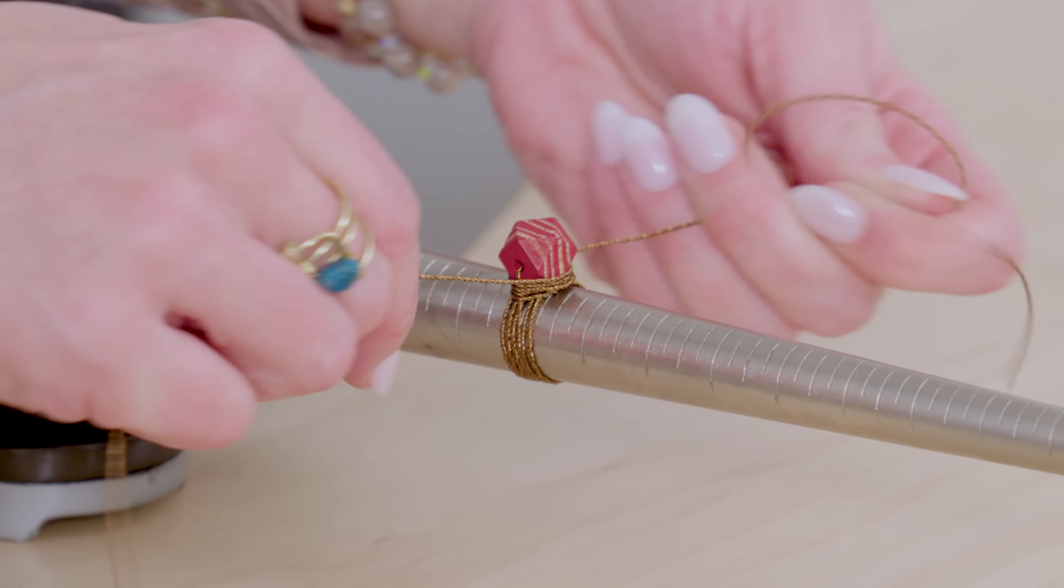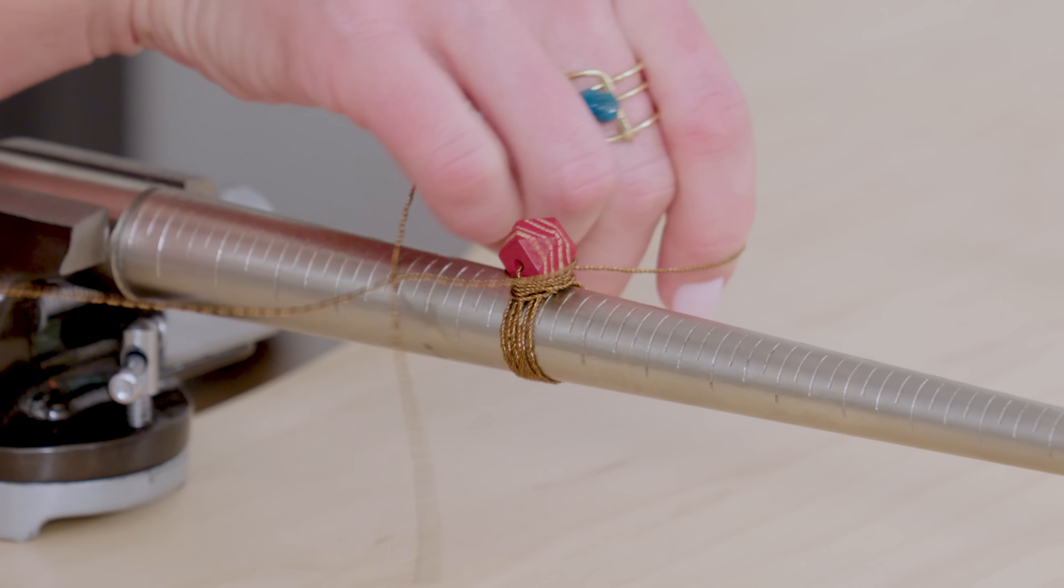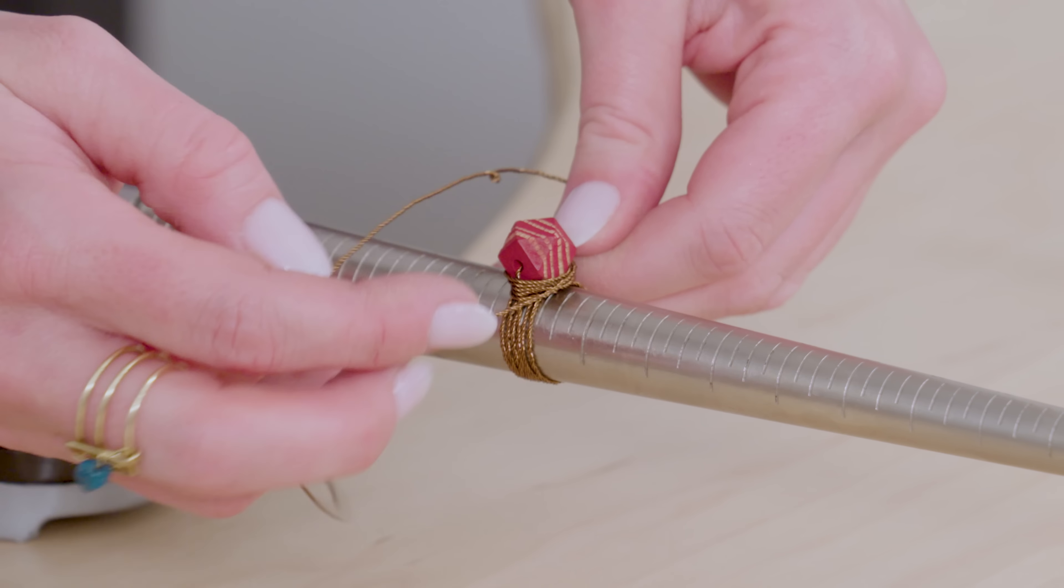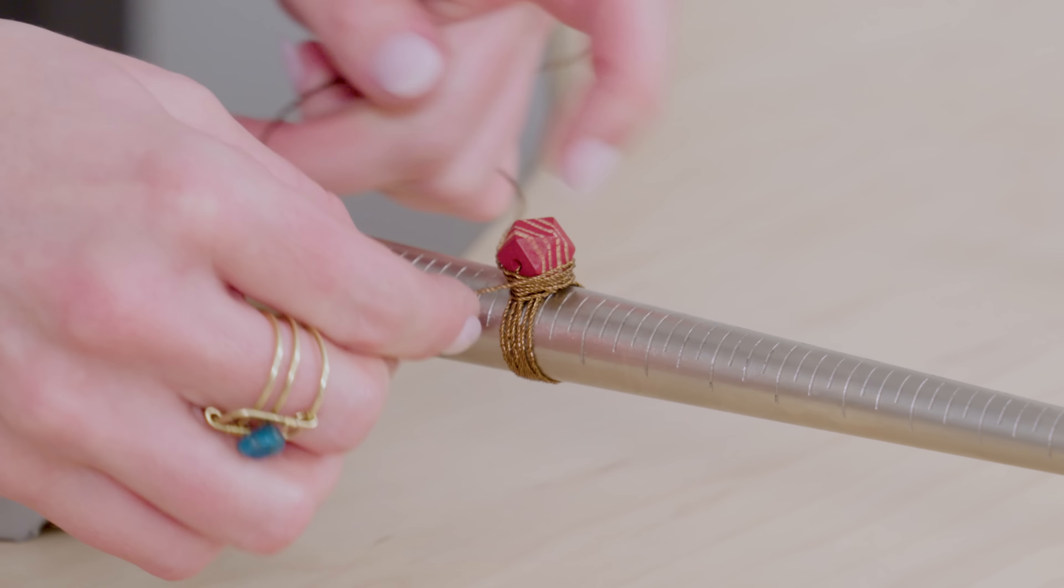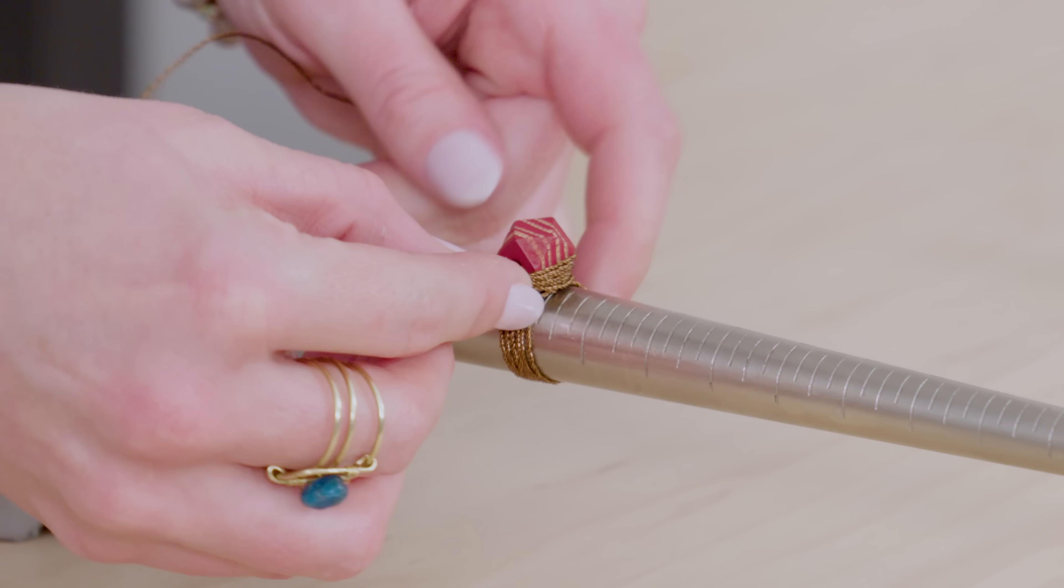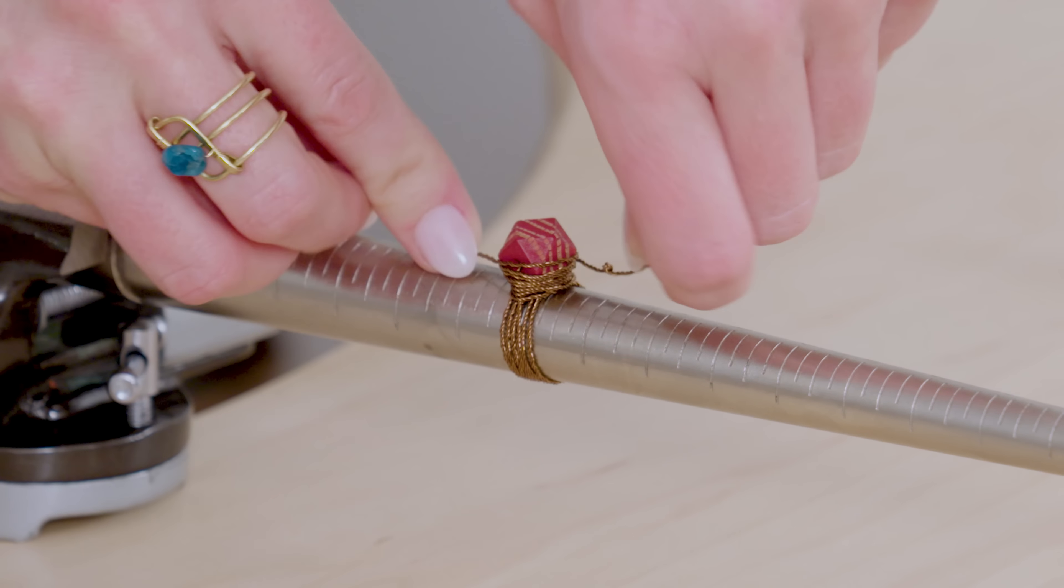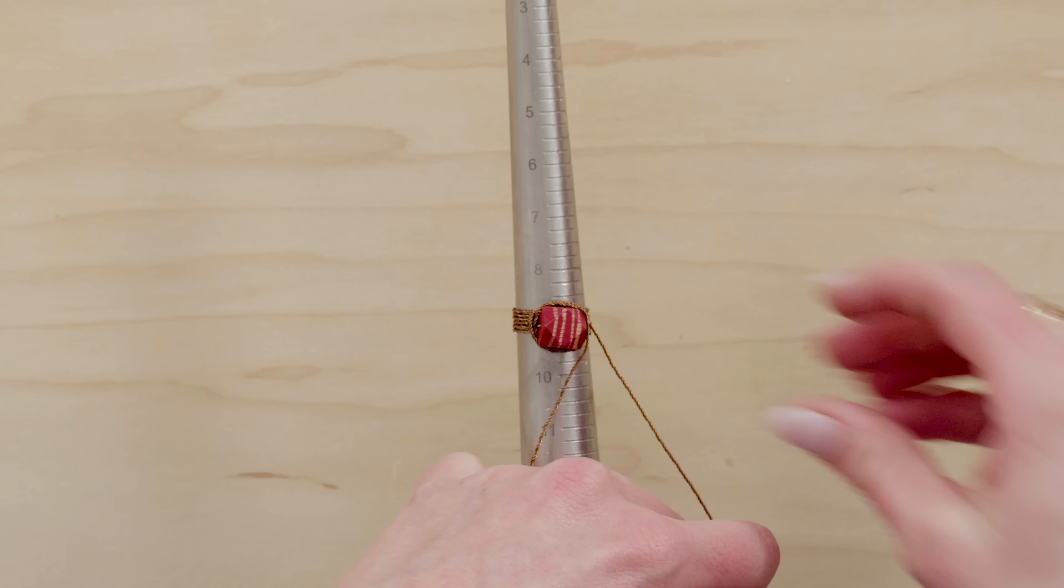And then you're going to just start helicopter wrapping like this. And I always try to kind of cover up that hole if I can on the side of the bead, but if it shows it's not a big deal.